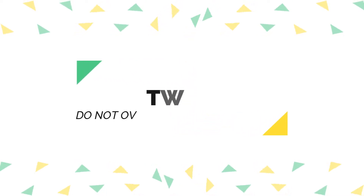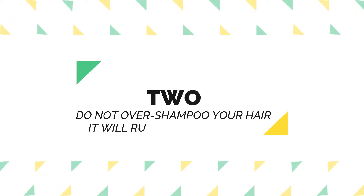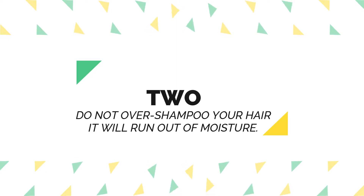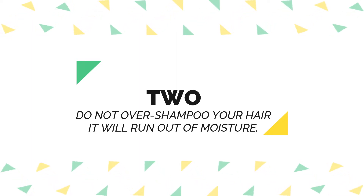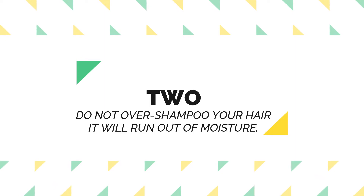Number two: do not over-shampoo your hair. As a type 4 hair carrier, you need to shampoo your hair less. Make sure you don't shampoo more than once a week, because it will strip out all the moisture, leading to hair dryness and breakage. If your hair gets dirty more often, depending on your location, alternate your shampoo with a co-wash, or follow shampooing with an apple cider vinegar rinse.